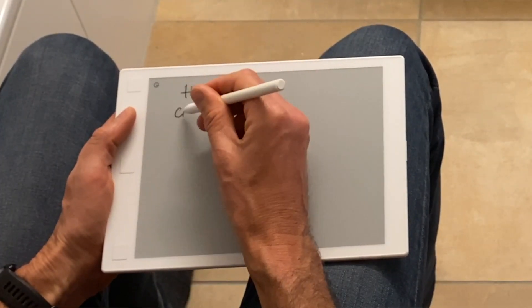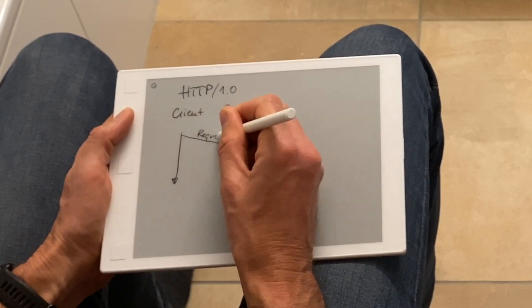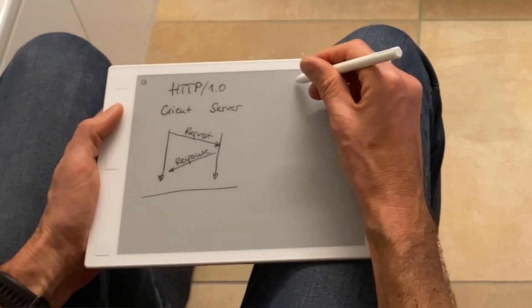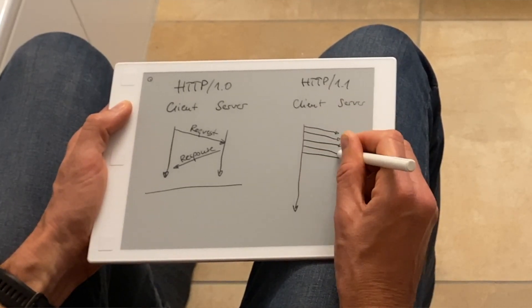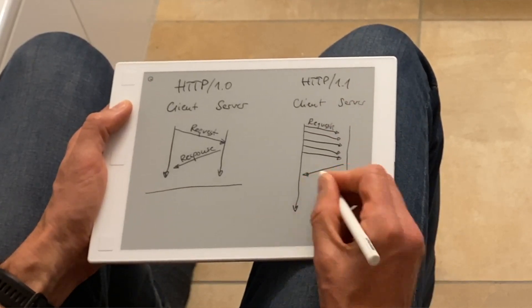In 1997, HTTP 1.1 was introduced, which brought pipelining. Pipelining means that instead of the HTTP 1.0 model — where a request is sent, a response is received, and then the connection is terminated — in HTTP 1.1 the client can send many different requests. The pipeline means you can send them with an implicit order, and the responses have to come back in the same order. This is quite an improvement because you can use the same connection to send multiple requests without waiting for each response before sending the next one.